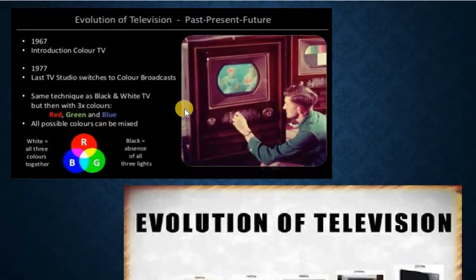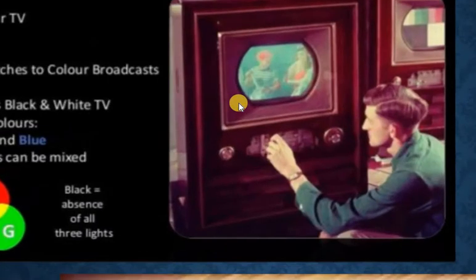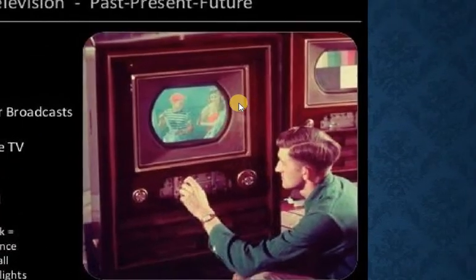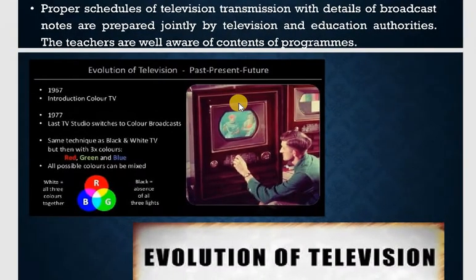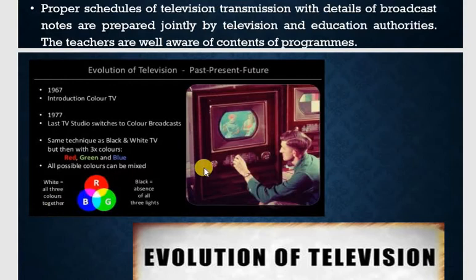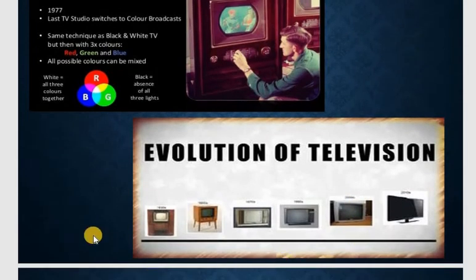In this picture you can easily differentiate these colors. The technique uses three colors — red, green, and blue — from which all possible colors can be mixed. White is produced by combining all three colors together, while black is the absence of all these colors. So this illustrates the evolution of television through these stages.